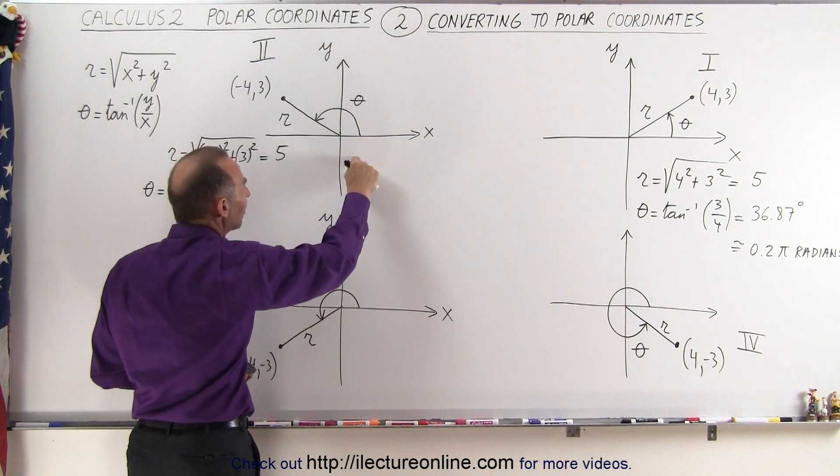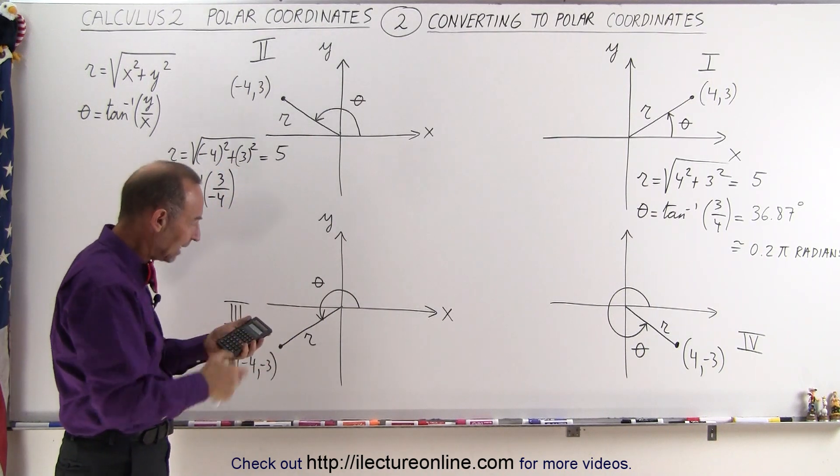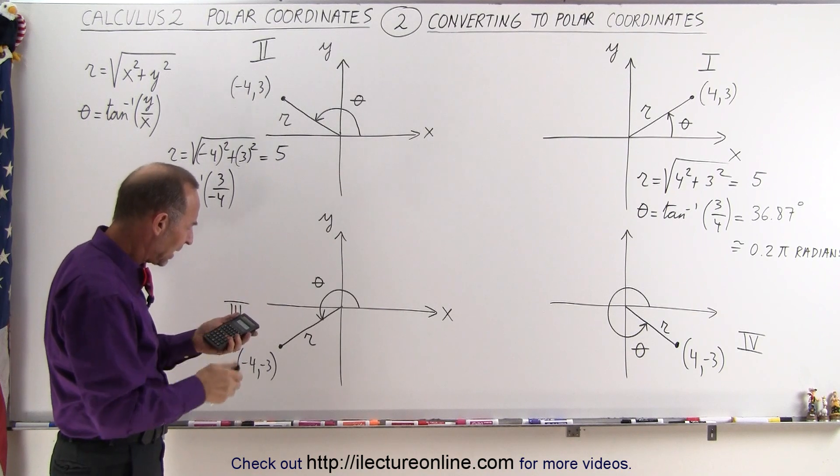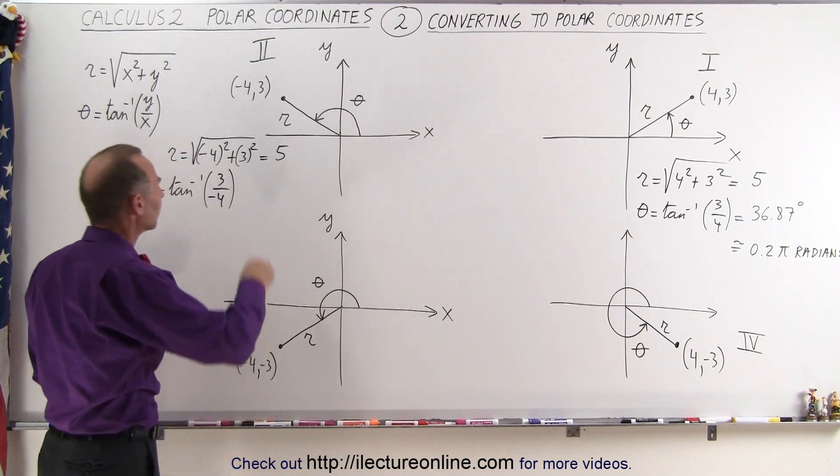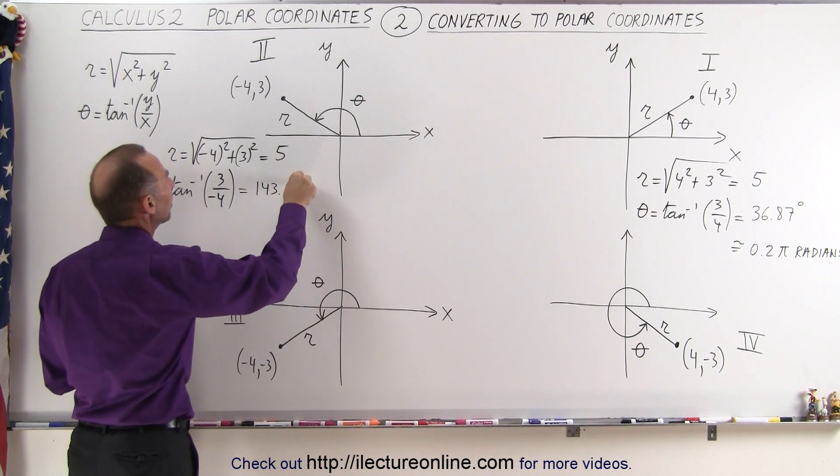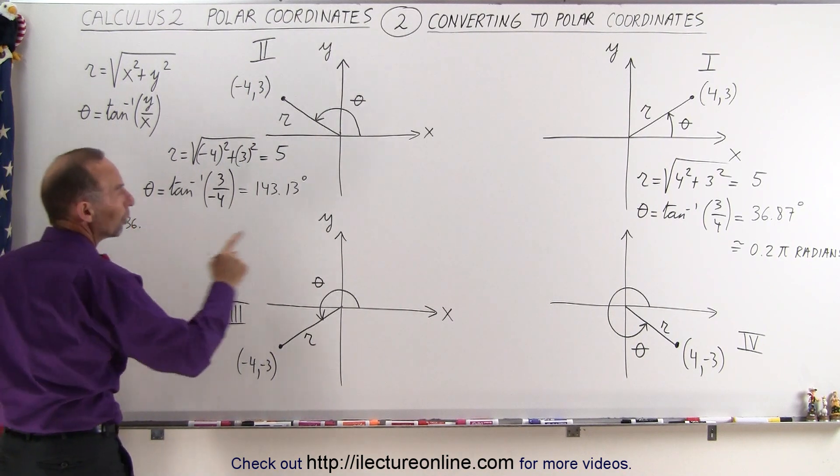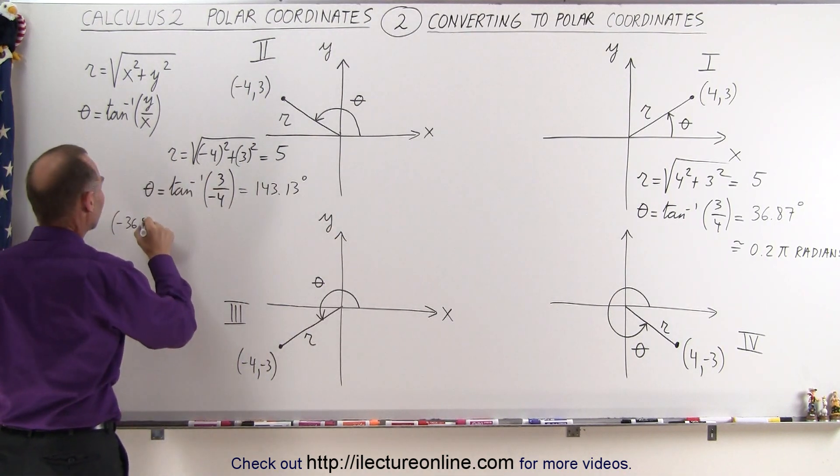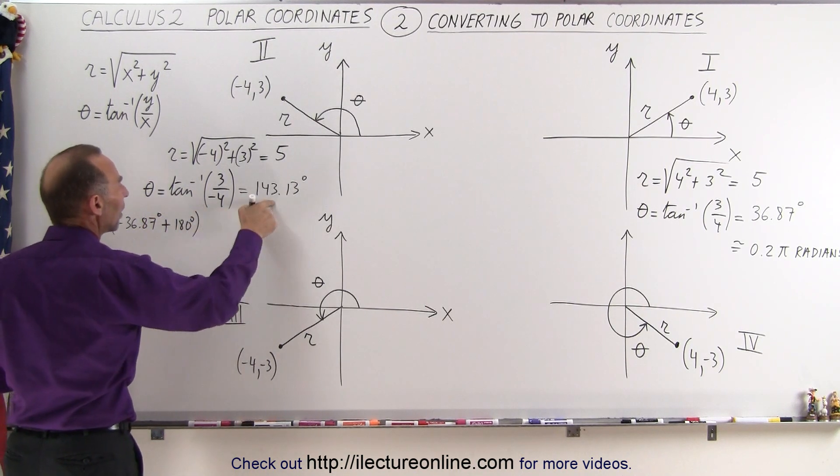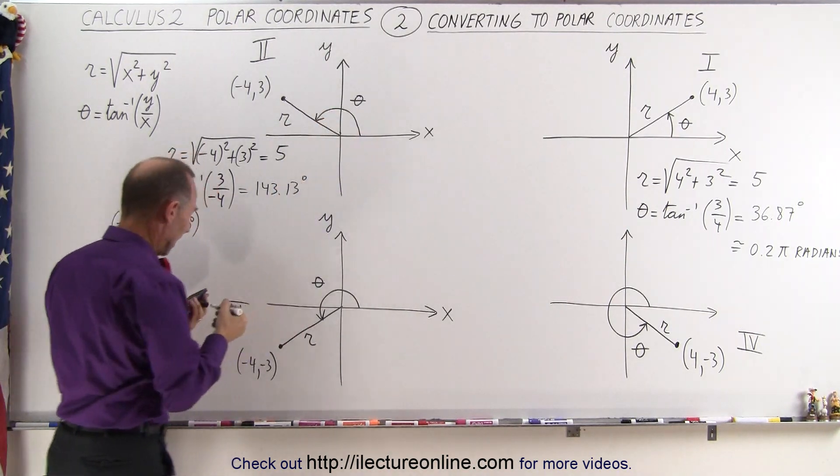In other words, we get an angle in this direction. That doesn't work for us. So therefore, we need to add 180 degrees to that. So in this case, we add 180, and we get 143.13 degrees. We've done that by taking minus 36.87 degrees and added 180 degrees to that to get 143.13 degrees. And you can see that does seem to be about right for that angle.